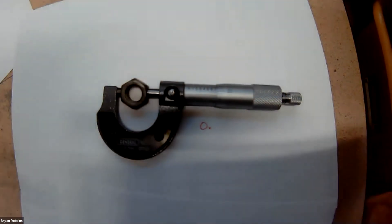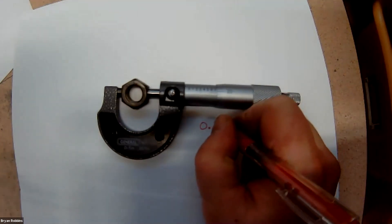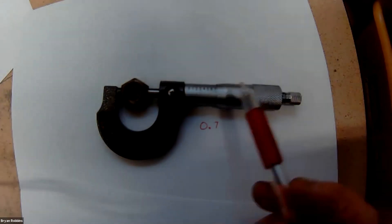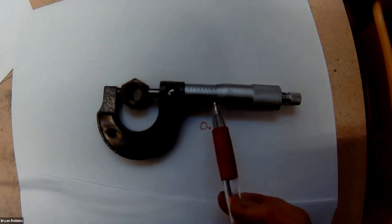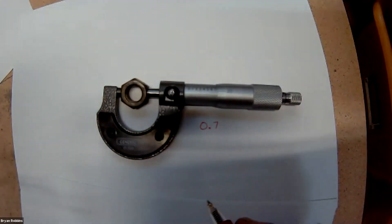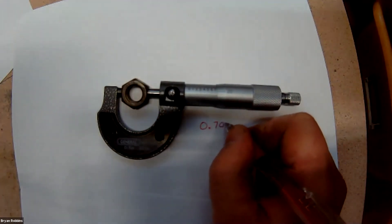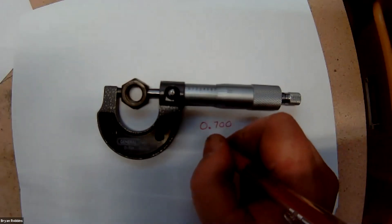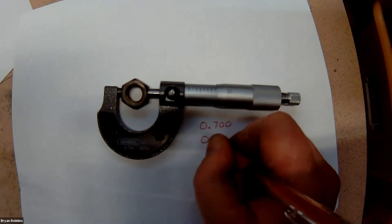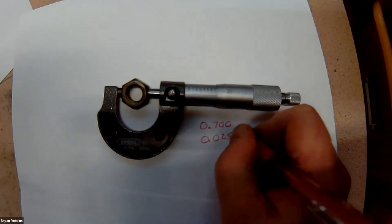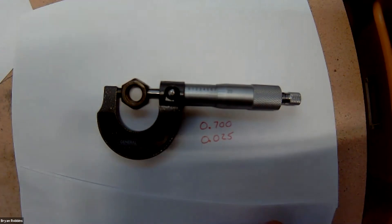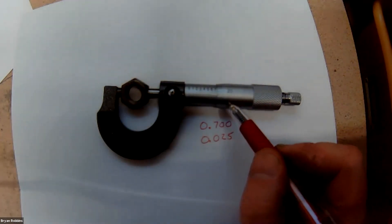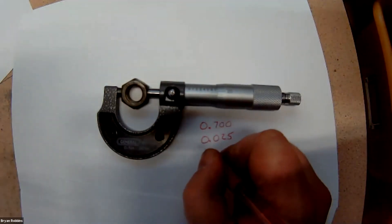But the last visible numbered line on there is a seven. And this is a zero to one inch micrometer. So, every measurement I make with it is going to start with a zero and a decimal point. So, the last visible numbered line is a seven, which is seven hundred thousandths. So, 0.7. The number of lines after the last visible line there is just one of them. So, 25 thousandths of an inch. Let's put this all together here. So, seven hundred thousandths of an inch showing up here, plus 25 thousandths of an inch, plus the reading over on the thimble, which is 19 thousandths of an inch.